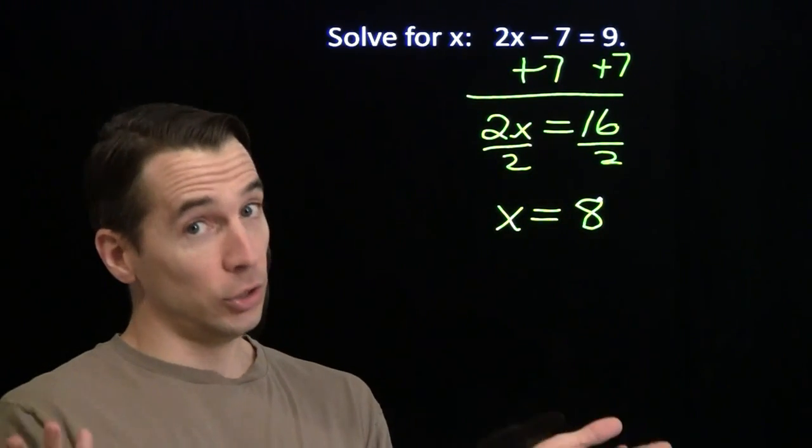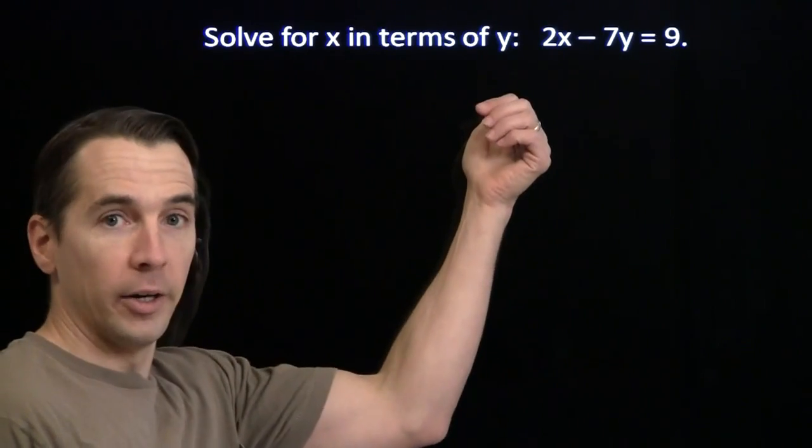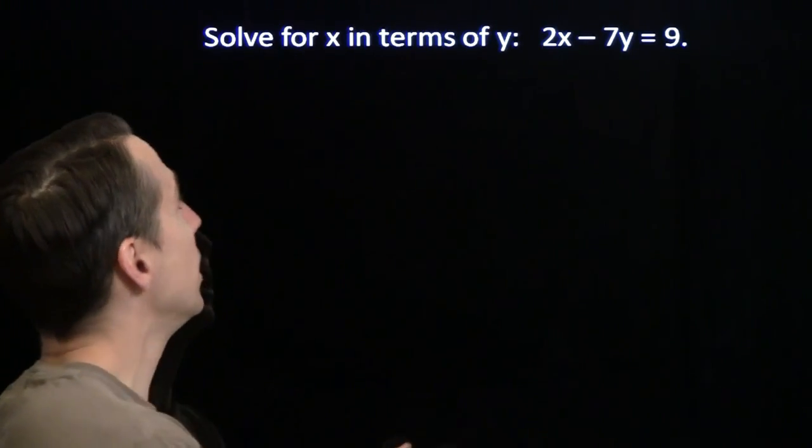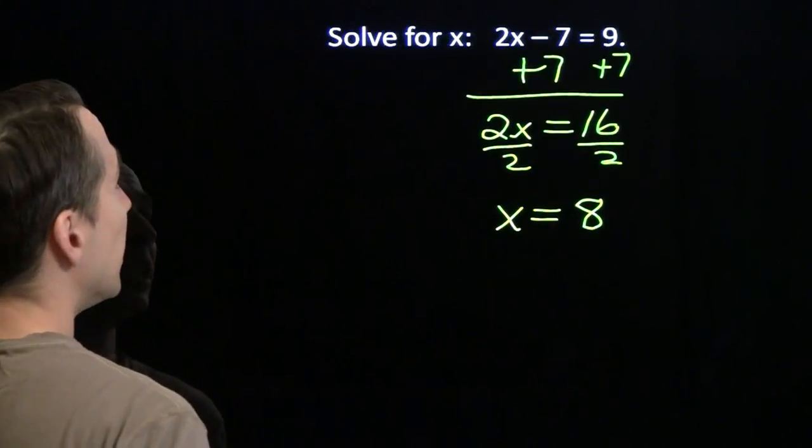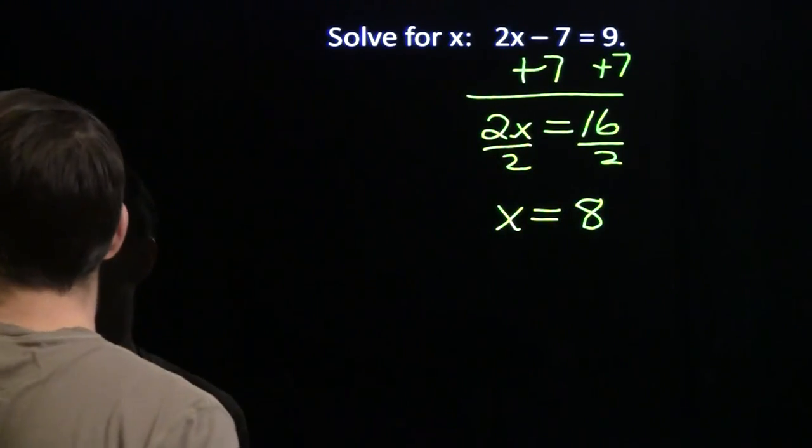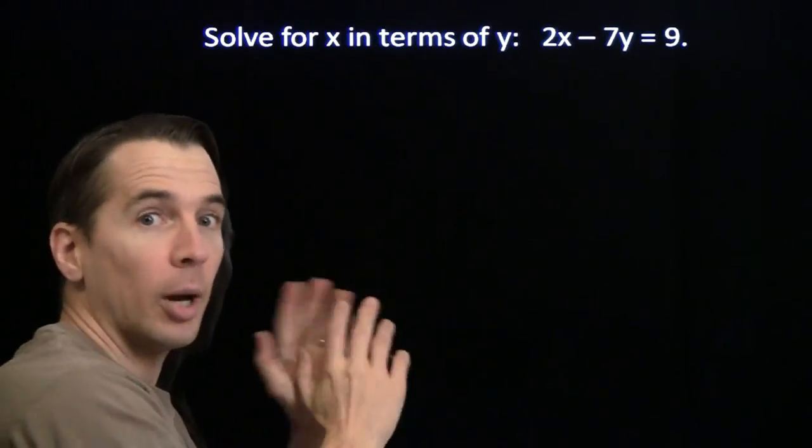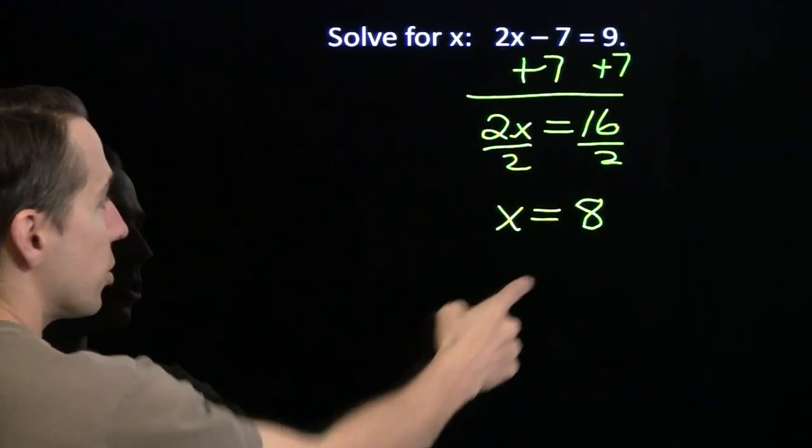Now if you watched those last few lessons, you know what we're going to do now. That's right, more variables. And you also know what I'm going to say. There's nothing new here. The name of the game here is solving for x, just like it was here. Only here, our final result is going to have some y's on the other side. We're going to have x equals and we're going to have some y's over there, instead of just having a number.